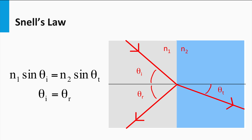The light transmitted travels further at the angle of transmission theta 2 to the normal. The relation between the angle of incidence and transmission is given by Snell's law. If the refractive index of medium 1 is smaller than that of medium 2, the angle of transmittance will be smaller than the angle of incidence. If the refractive index of medium 1 is larger than that of medium 2, it's the other way around.